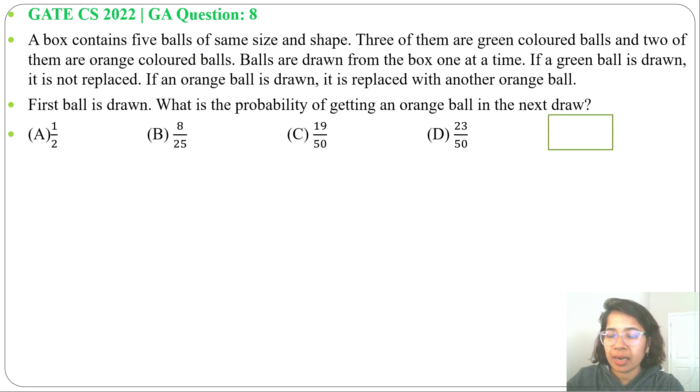Given a box having 5 balls, 3 of them are green and 2 of them are orange. Now 2 cases can arise. First case if first time we draw a green ball. Second case if first time we draw an orange ball.